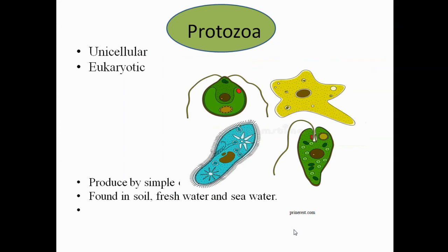Protozoa are unicellular eukaryotic organisms that reproduce by simple cell division. Examples include amoeba and paramecium, found in soil, fresh water, and sea water. Other examples are Euglena and Plasmodium.